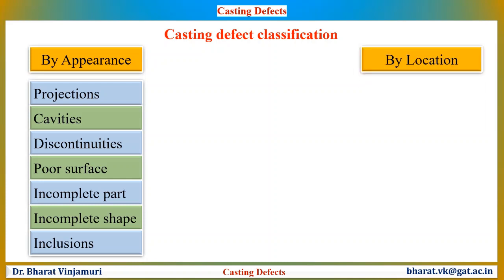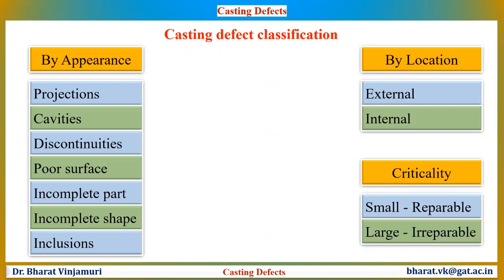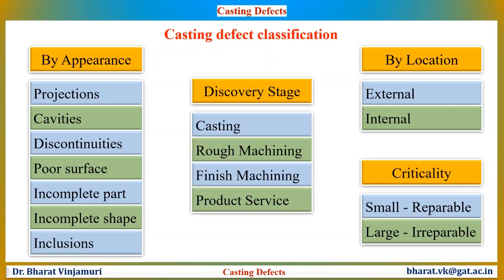Later, see whether the defect is internal or external. The next classification is about whether the defect is critical — like irreparable or repairable. Also, defects are analyzed based on the time or stage the defect was discovered — whether the defect was found during the casting stage, during machining, or when the product is in service. The percentage of castings being rejected in industries has made us rethink about defects and their effect on production. Let us now understand each defect in detail.